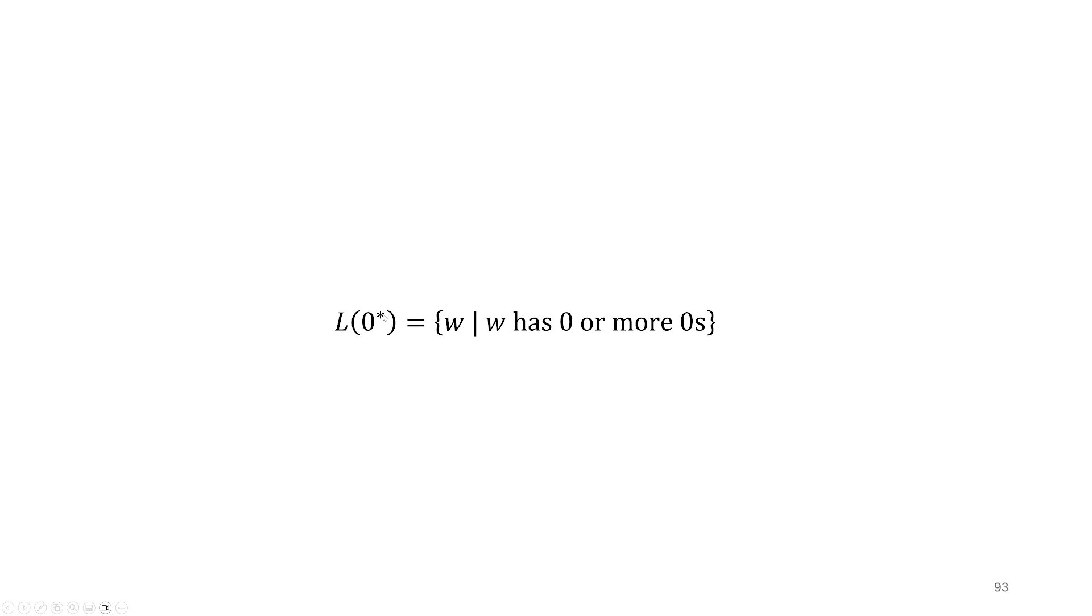Well, this gives us the language all strings w that have 0 or more 0s. Of course, that's what the star operator means for us, 0 or more copies of whatever we're applying it to. So again, we can very simply state this language here as a regular expression, just stating 0 star.